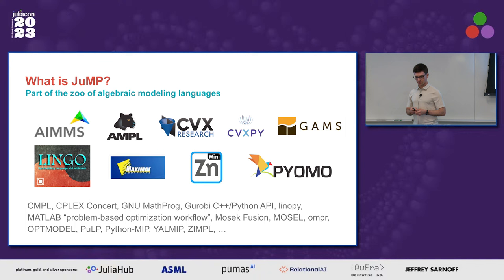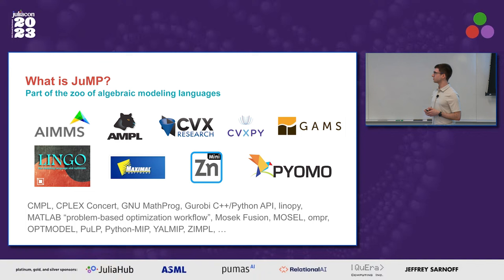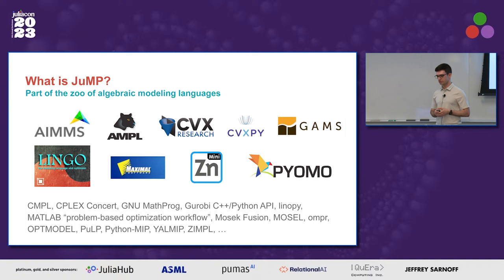Most people in this room probably know what JuMP is, but maybe not everyone on YouTube. JuMP is an algebraic modeling language — part of what we call the zoo of algebraic modeling languages. There's quite a number of packages that do something very similar. CVXPy and PyOMO are pretty well known in the Python world. GAMS, AMPL, and AIMS are used traditionally in the operations research world.